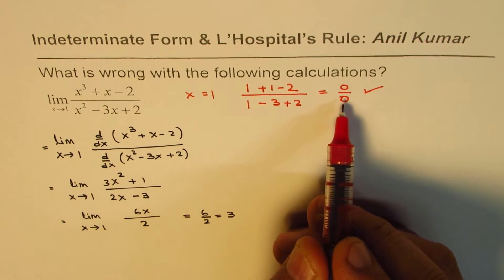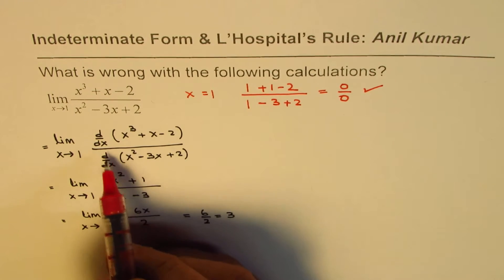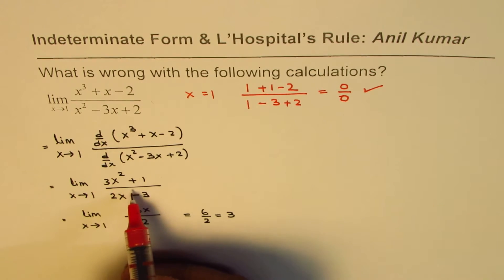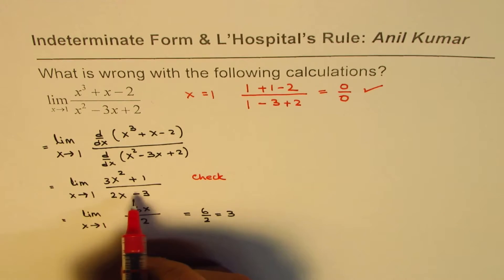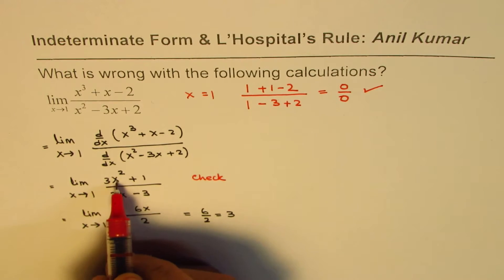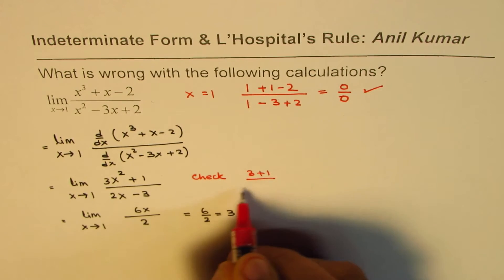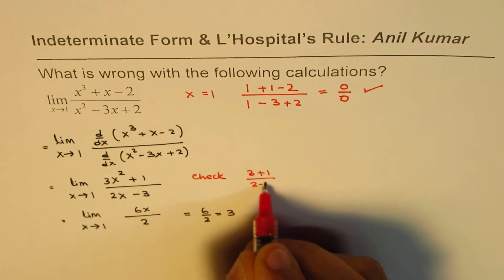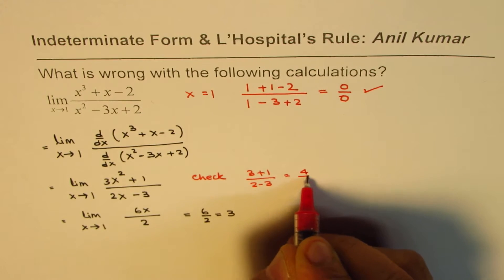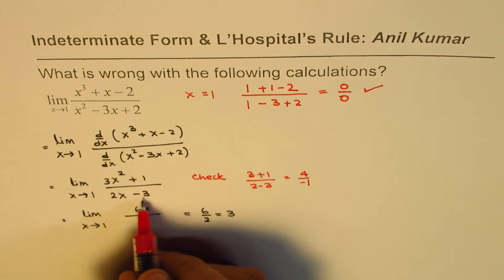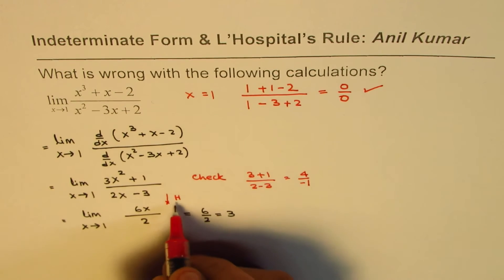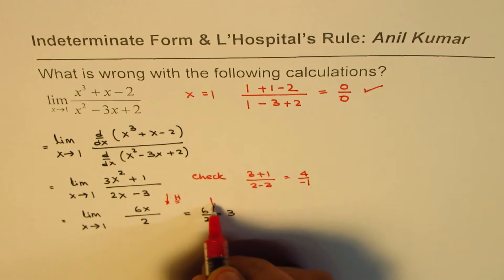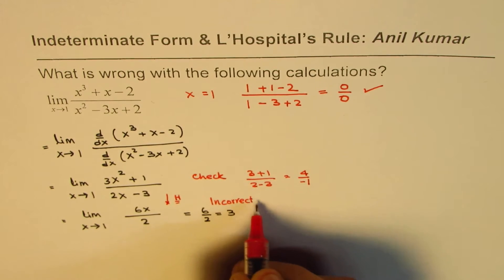Remember, when we started we did the checking for indeterminate form and then applied the rule. Next time when we applied the rule here, we need to check. So if you check at this stage, if I substitute 1 here I get 3 + 1 divided by 2 - 3. Now that is 4 over -1, that is not 0 over 0.